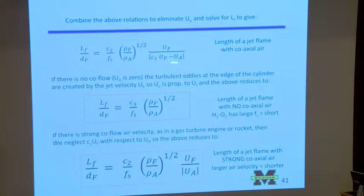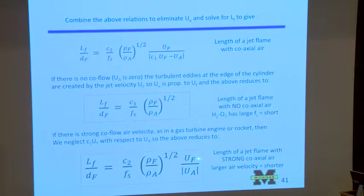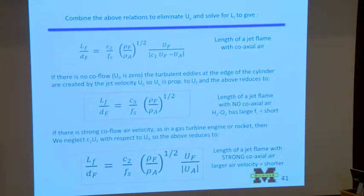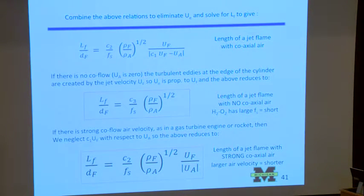We end up with the right result with a few adjustable constants: the flame length becomes a formula involving the stoichiometric fuel-air ratio. If there's no forced co-flow air, this term drops out, U_F cancels, and we get the correct relation that the length of the flame is independent of fuel velocity — a turbulent jet flame is known to have a length independent of the fuel velocity. This gives the right density ratio and the right dependence on fuel-air ratio. You just have to determine the constant from experiments. If you have a strong co-axial air co-flow, the eddies are driven by the air and rotate differently, changing the formula: the more air you put in, the shorter the flame gets, because you're driving stronger eddies and getting more entrainment.